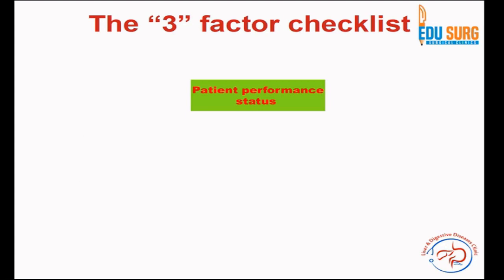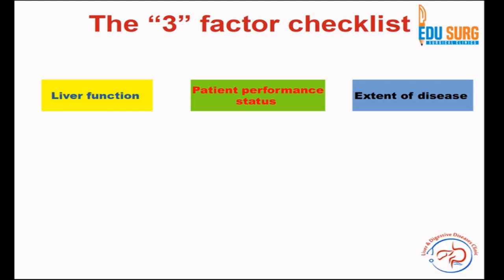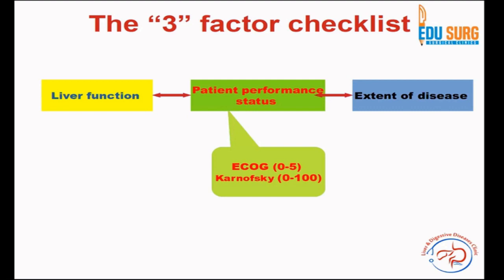You have to check the patient's performance status — you may be planning very good treatments, but if the patient has poor performance status, they will not tolerate a hepatectomy. The second factor is seeing the extent of disease, and the third is assessing the liver function. These three factors are very interrelated, and hence we need to assess all three to plan patient treatment.